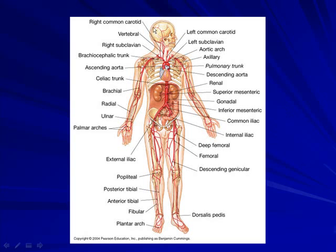Some of the blood vessels you should be able to identify: certainly the carotid artery, which is important because it's an area where you can palpate a pulse. There is a right common carotid artery and a left common carotid artery. There is also the aortic arch, the thoracic aorta, and the abdominal aorta — you should be able to identify all of those.